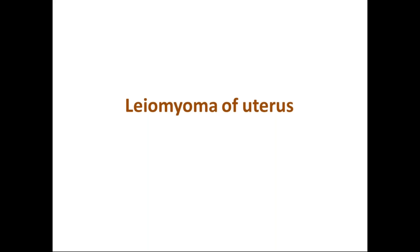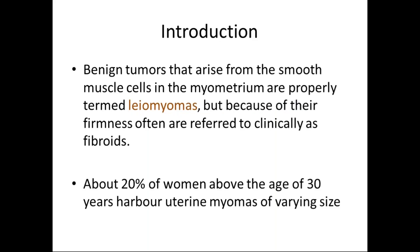Today's topic is leiomyoma of the uterus. The clinical term for leiomyoma is fibroids. These are benign tumors that arise from the smooth muscle cells in the myometrium and are properly termed leiomyomas, but because of their firmness they are often referred to clinically as fibroids. About 20% of women above the age of 30 years harbor uterine myomas of varying sizes.